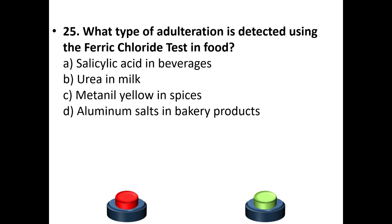Last question, number 25: What type of adulteration is detected using the ferric chloride test in food? A. Salicylic acid in beverages, B. Urea in milk, C. Metanil yellow in spices, D. Aluminium salts in bakery products. Your answer is option A: Salicylic acid in beverages.